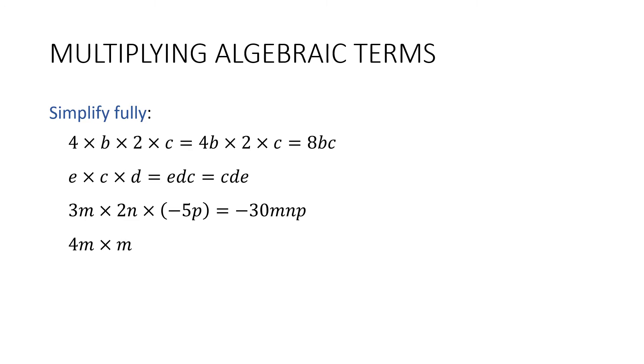How about this one? 4m times m. So we could just take out the times sign and we get 4mm. But there's a better way to write that. Do you know what it is? Remember how 3 times 3 can be written as 3 squared? Well, m times m can be written as m squared. So 4m squared is in simplest form.